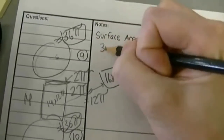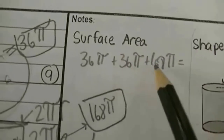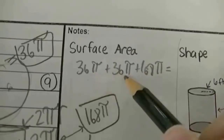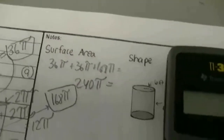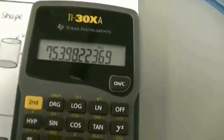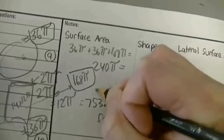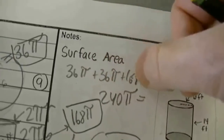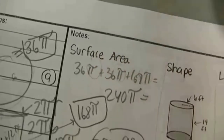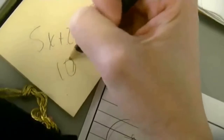All three terms have pi — it's like combining like terms. 36 plus 36 plus 168 gives 240 pi. Then 240 times pi gives approximately 753.98 feet squared. If one didn't have pi, I'd compute them separately. The reason I could add them together is because they all end in pi — like 5x plus 2x plus 3x equals 10x.